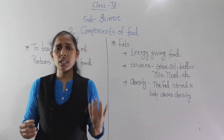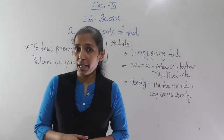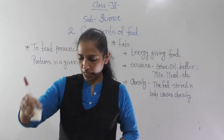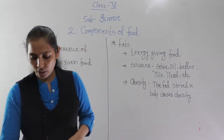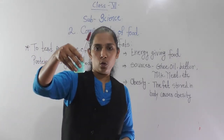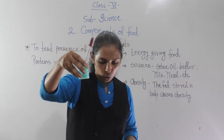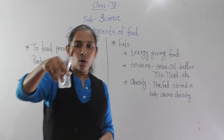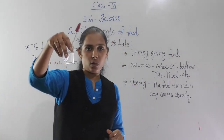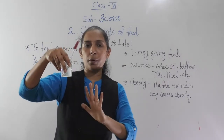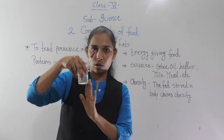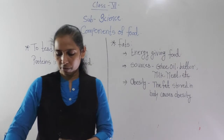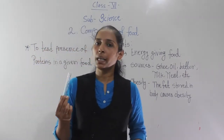Instead of boiled egg as given in the book, I have taken milk here. I have also taken copper sulphate solution, and I have taken caustic soda — caustic soda means sodium hydroxide. I have already prepared the solution of caustic soda and the solution of copper sulphate. We also require some droppers and a testing tube.